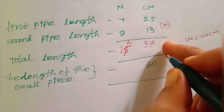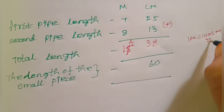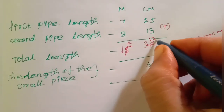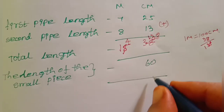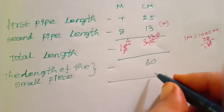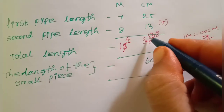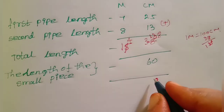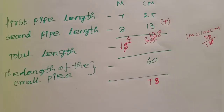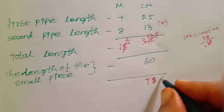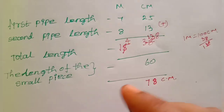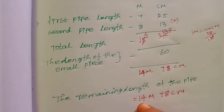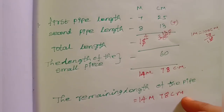The total length of the pipe is equal to 14 meter 78 cm. So, the remaining length of the pipe is 14 meter 78 cm.